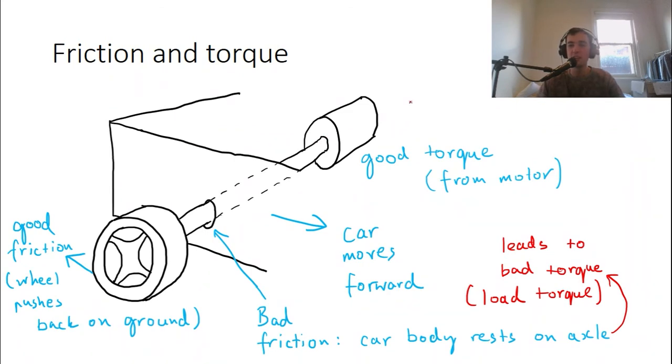Now what's happening is the motor is providing torque. Why is that? Because it's like a force, but it's forcing the wheel to move around. It's twisting it around. So whenever something is twisted or turned by force, that's actually torque.